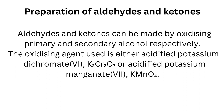Preparation of aldehydes and ketones: aldehydes and ketones can be made by oxidizing primary and secondary alcohols respectively. The oxidizing agent used is either acidified potassium dichromate K₂Cr₂O₇ or acidified potassium manganate(VII) KMnO₄.